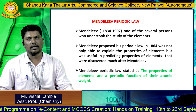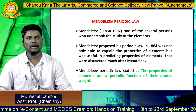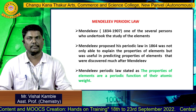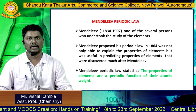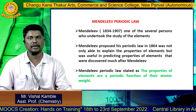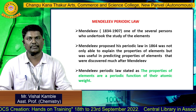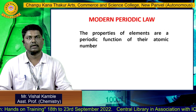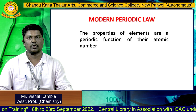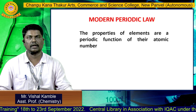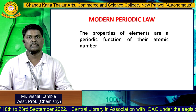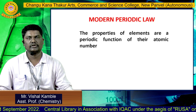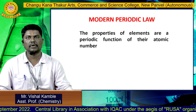For the periodic table, we must know Mendeleev's periodic law. Mendeleev's periodic law states that the properties of elements are the periodic function of their atomic weight. The modern periodic law states that the properties of elements are the periodic function of their atomic number.